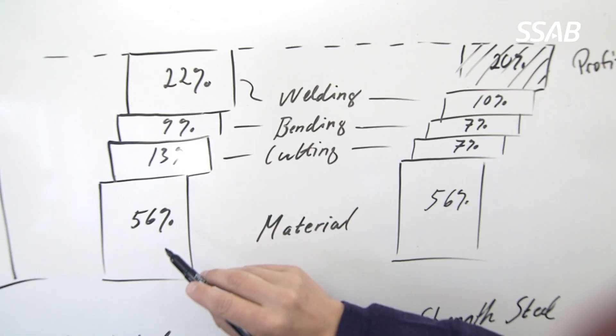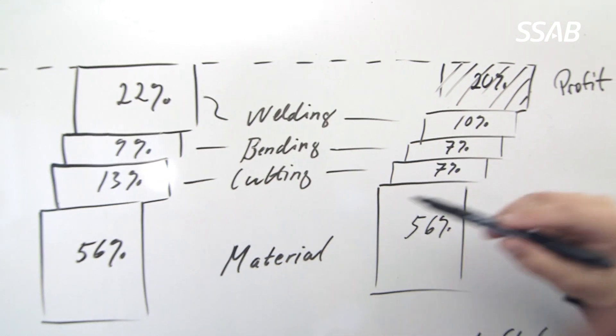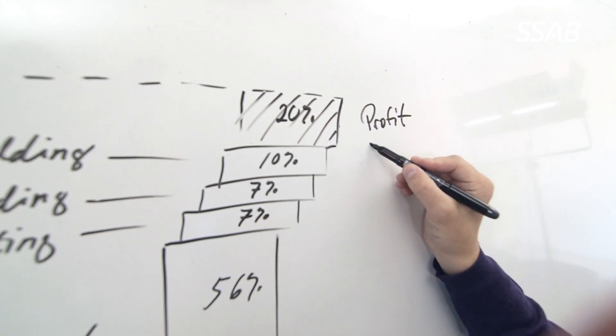Regarding production cost, we have the same material cost in both cases, but the welding, bending and cutting cost is lower in the new version. That leaves us with 20% profit.